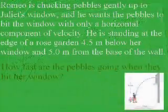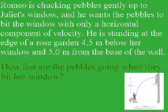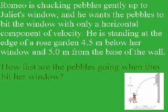Let me read the question first. Romeo is chucking pebbles gently up to Juliet's window, and he wants the pebbles to hit the window with only a horizontal component of velocity. He is standing at the edge of a rose garden 4.5 meters below her window and 5 meters from the base of the wall.